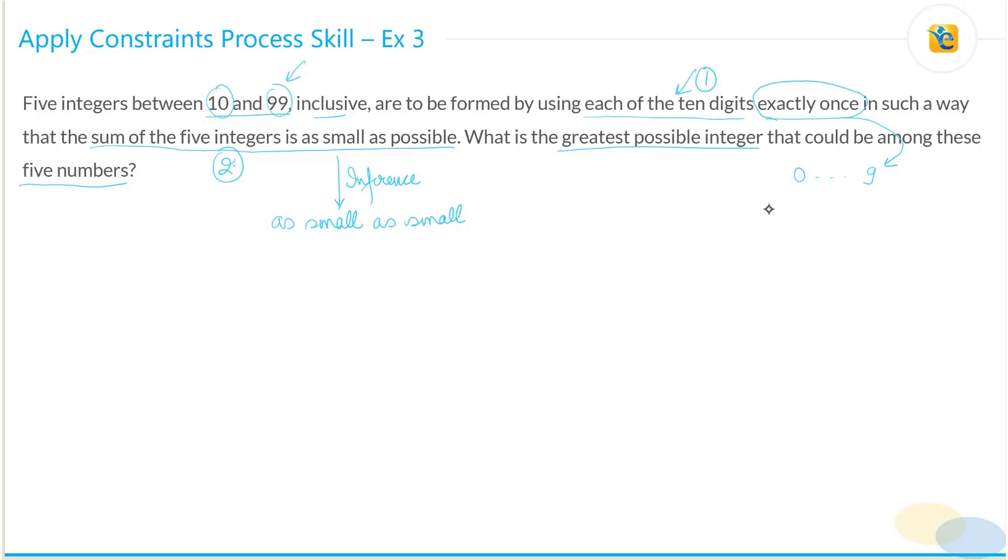You can use each of the digits only once, which means that the tens digit can be made from five digits here. And the ones digit, the digits at the one place, will be made by the remaining five digits.